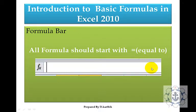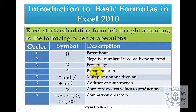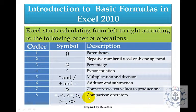This is the formula bar where we are going to apply all the formulas. All formulas start with the symbol equal to. Excel starts calculating from left to right according to the following order of operations: parenthesis, negative number, percentage, exponential, multiplication and division, addition and subtraction, concatenation of two text values, and comparison operators — equal to, less than, less than or equal to, greater than, greater than or equal to, not equal to.